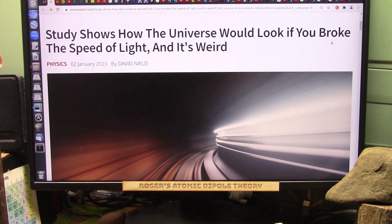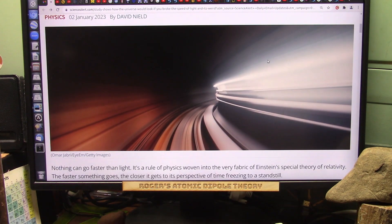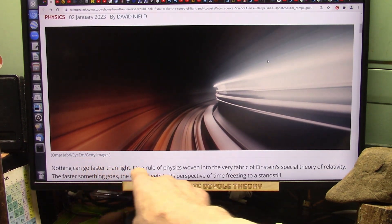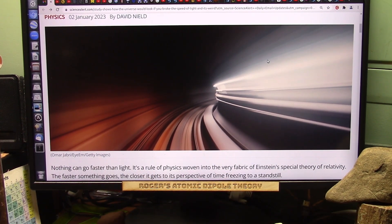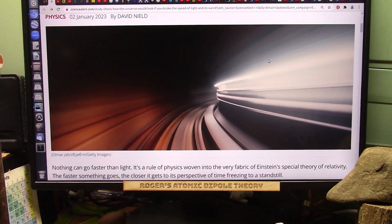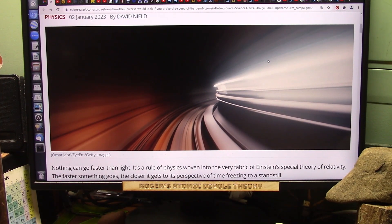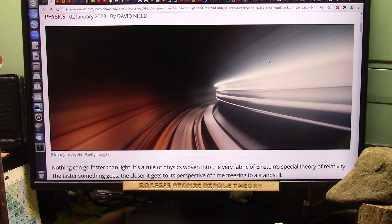Okay my friends, study shows how the universe would look if you broke the speed of light, and it's weird because it's impossible. Nothing can go faster than light. It's a rule of physics woven into the very fabric of Einstein's special theory of relativity. That's it. You can't go faster than light. Case closed.